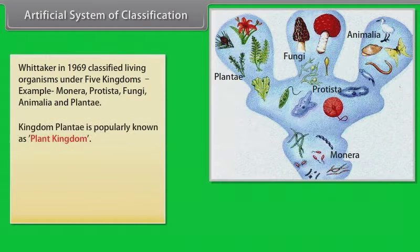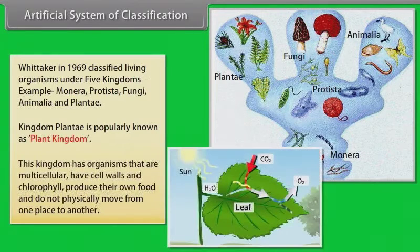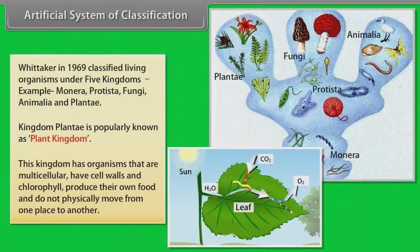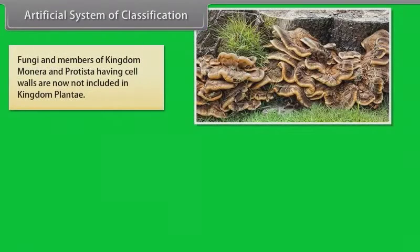Kingdom plantae. Kingdom plantae is popularly known as plant kingdom. This kingdom has organisms that are multicellular, have cell walls and chlorophyll, produce their own food and do not physically move from one place to another. Fungi and members of kingdom Monera and Protista having cell walls are now not included in kingdom plantae.